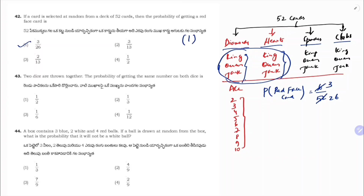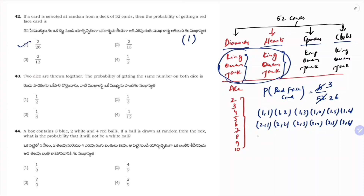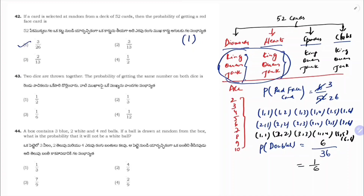Probability of getting the same number on both dice when 2 dice are thrown together. Total outcomes = 36. Doublets (same number): (1,1), (2,2), (3,3), (4,4), (5,5), (6,6) — total 6 favorable outcomes. Probability = 6/36 = 1/6. Correct option is 3.